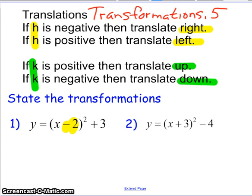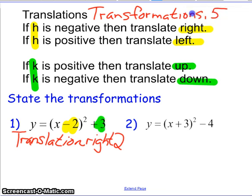So that would be, the opposite of negative would be to the right. So this is a translation, you have to use the word translation, to the right two. Now the K value is going to be your up or down translation. So K is three. So this is also going to be translated up three.